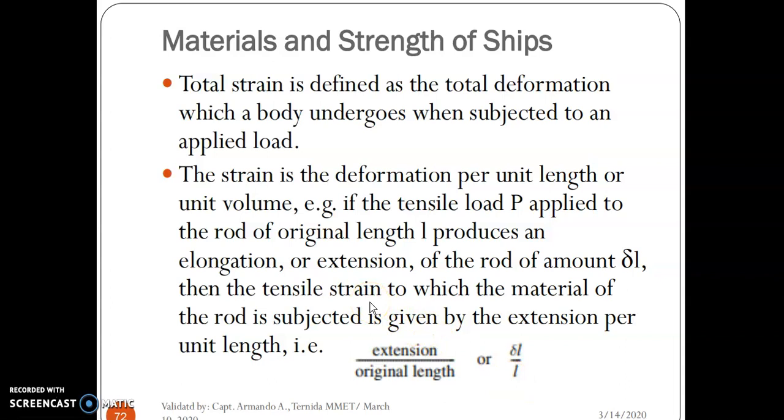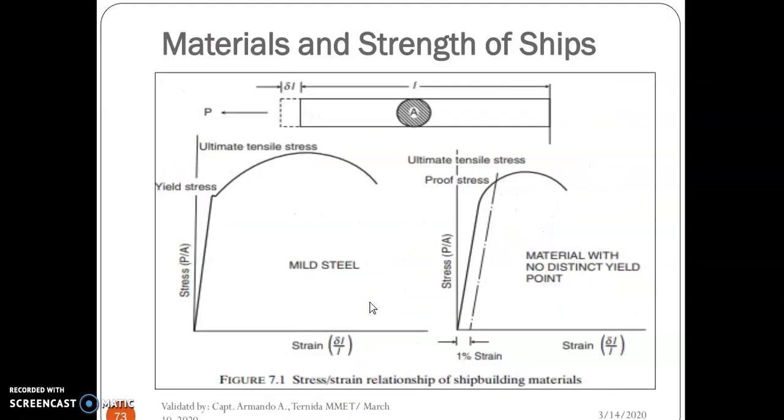Okay, we can see in our figure here, Figure 7.1, stress-strain relationship of shipbuilding materials. This is the yield stress, the extension length, the ultimate tensile stress. Yield stress is where the point will yield. Here, ultimate tensile stress, proof stress. Here is the material with no distinct yield point; here there is a yield point.